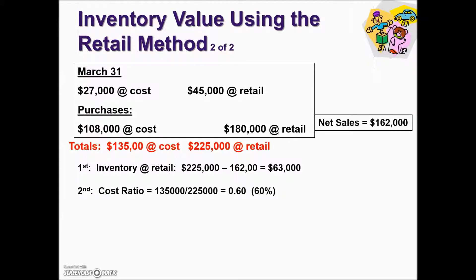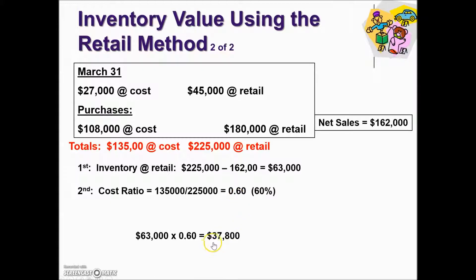We need to find the cost ratio of the value of goods. So we take our cost and divide it by our retail, giving us our cost ratio. The final step to give us an estimated inventory value at cost is to take our inventory at retail — $63,000 — times our cost ratio, giving us the inventory at cost.